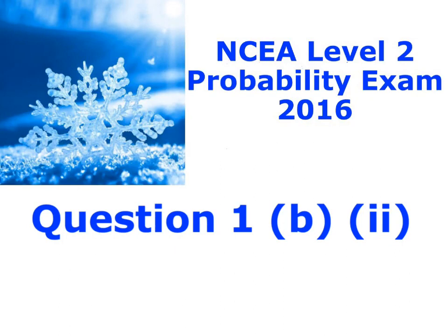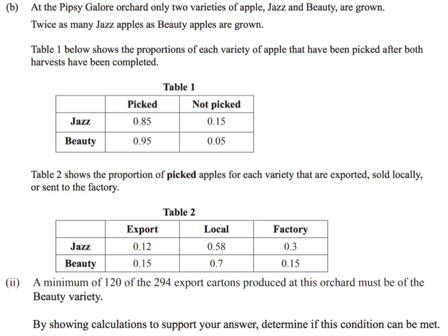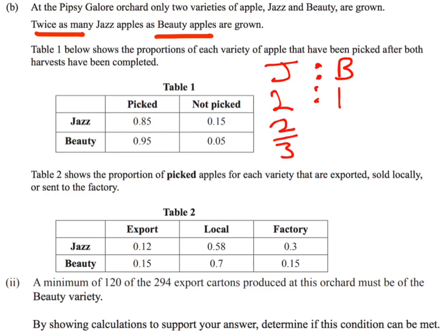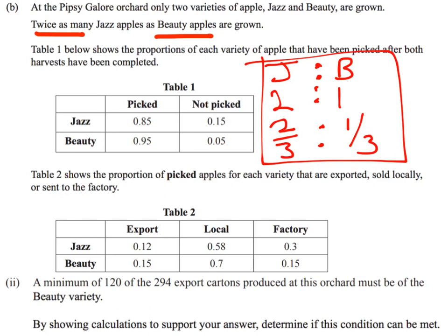Here is question 1b part 2. We have our table which we'll need. There are twice as many Jazz apples as Beauty apples grown, giving a ratio of Jazz to Beauty apple trees of 2 to 1, or two-thirds to one-third. Table 1 shows what percentage of apples get picked from each tree type, and Table 2 shows how many of the picked apples are sent to export or to the local market.